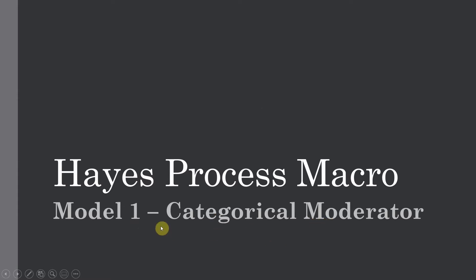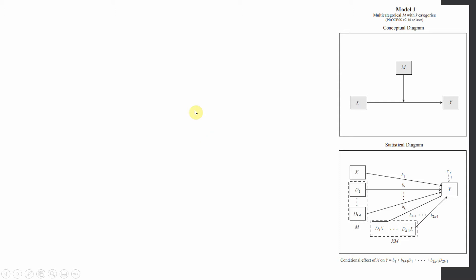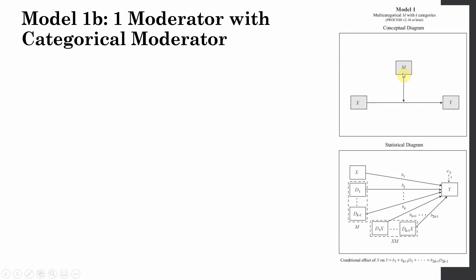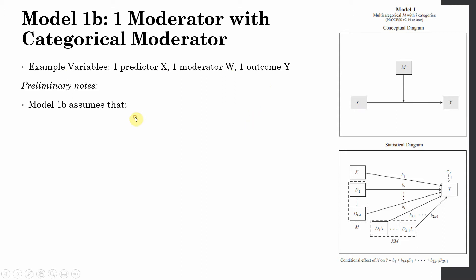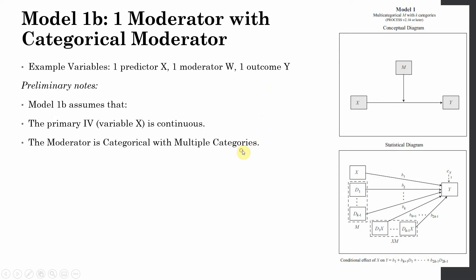In this session we are going to look into how a categorical variable can moderate a relationship between an IV and a DV. This is the conceptual diagram and the statistical diagram for our model. We have one IV X, one DV Y, and our moderator is a multi-categorical M with K number of categories — one predictor, one moderator, one outcome. X is continuous, Y is continuous, and M has multiple categories.